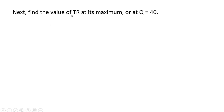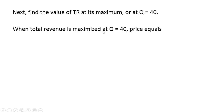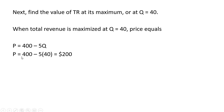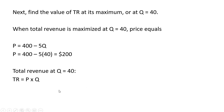Next, find the value of total revenue at its maximum. We want to find what total revenue equals when Q equals 40. When total revenue is maximized at Q equals 40, price equals — taking our price equation and plugging 40 into it — we see price equals $200. Therefore, total revenue at Q equals 40 is going to be 200 times 40, or $8,000.